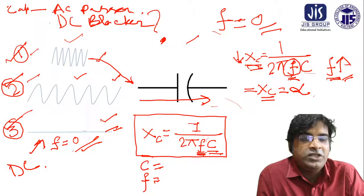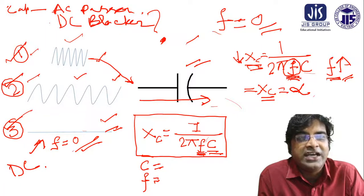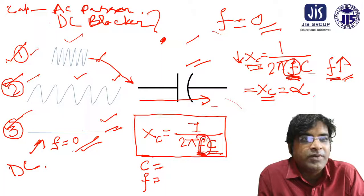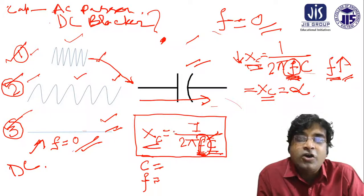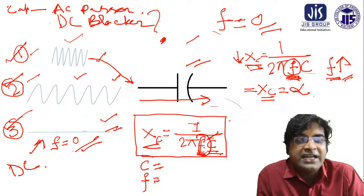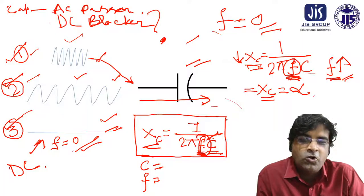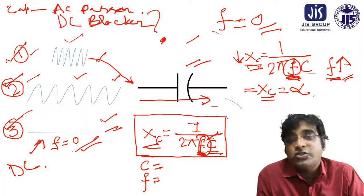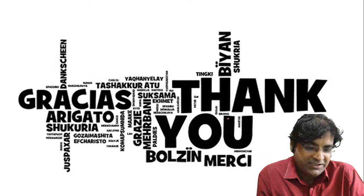From that point of view, this particular capacitance is called a reactance — because it reacts with the f value. If f is changed, XC automatically changes. So capacitance reacts on the basis of f. That is why it is called reactance. Capacitance is a reactance, and similarly inductance is also a reactance. I hope you can understand and enjoy this video. Thank you very much for watching.